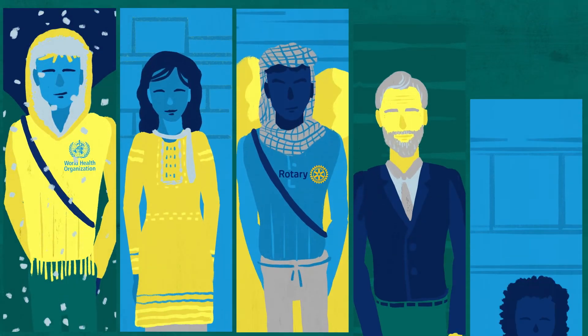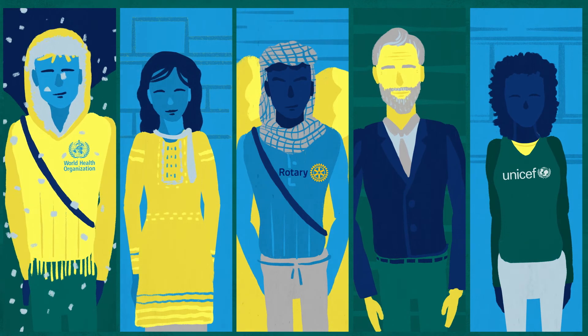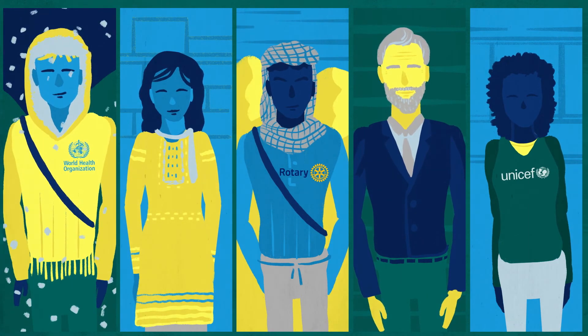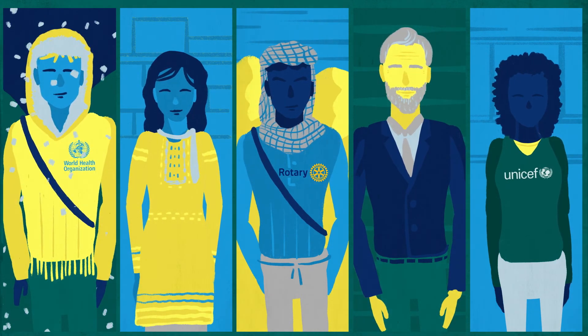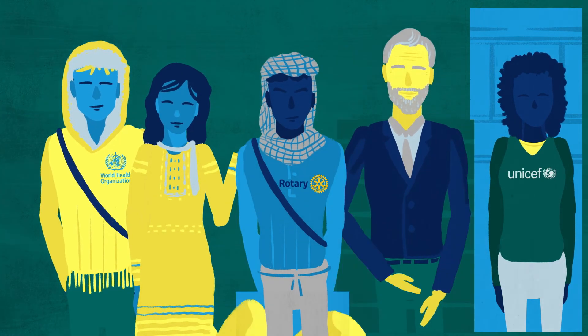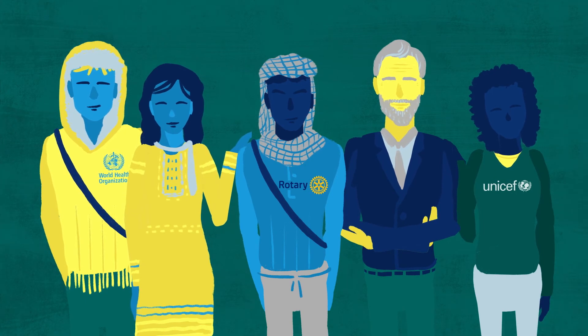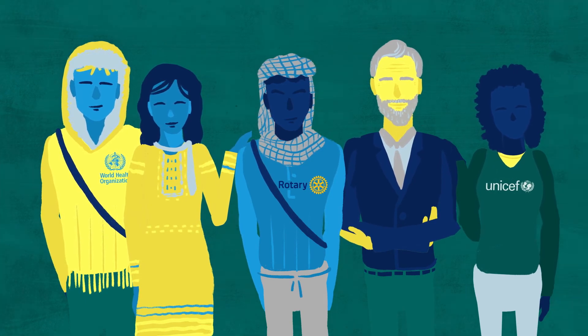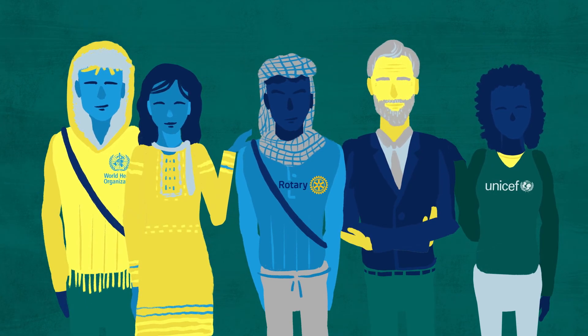This rapid response to any sign of polio relies on an incredible network of people from governments to community leaders to vaccinators on the doorstep. It is thanks to them that polio outbreaks can be stopped and future generations of children protected against this paralyzing disease.